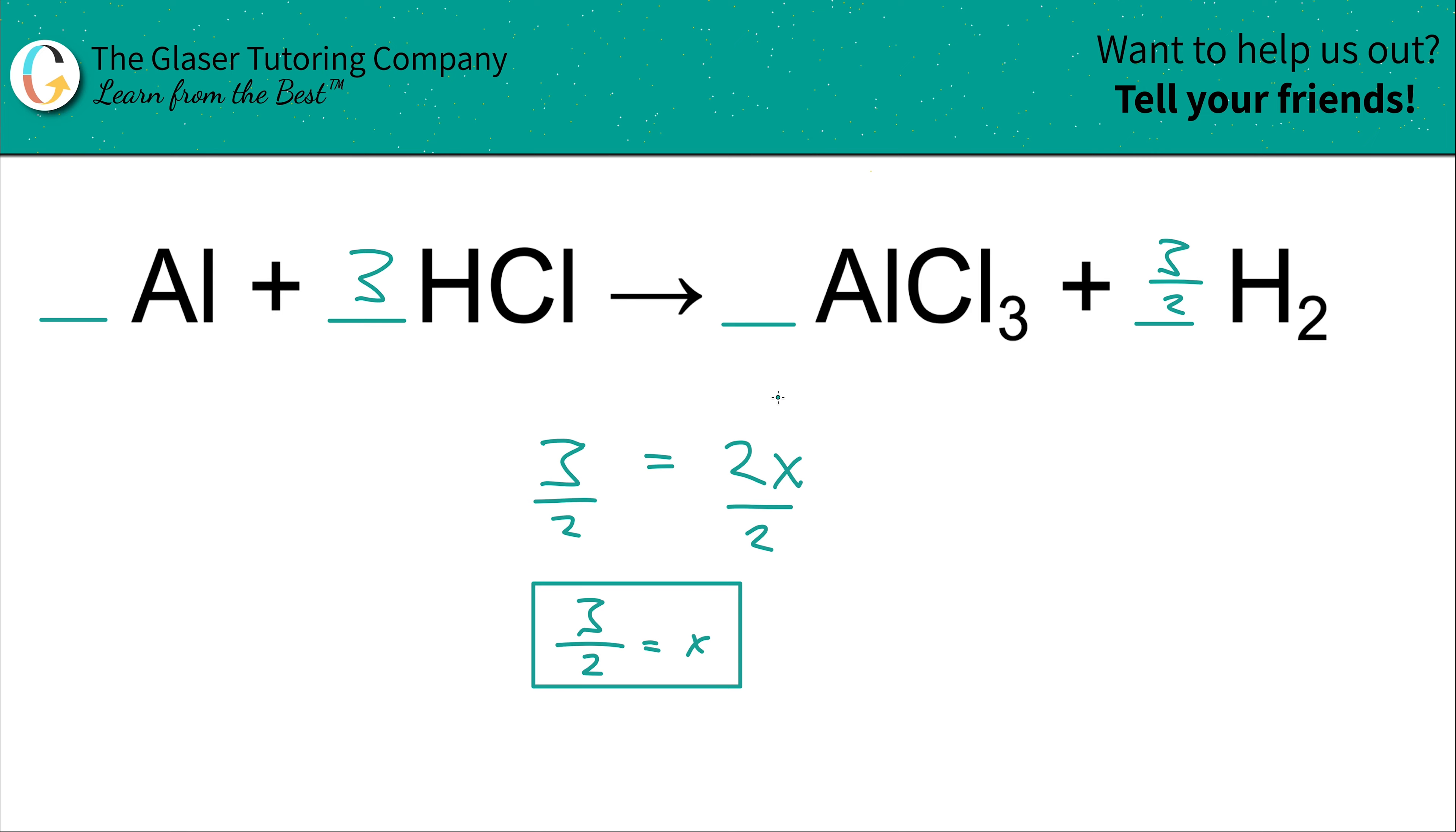So now technically, this equation is fully balanced, but you can't have three halves of a molecule. What does that even mean? That's like having three halves of a person. Can't happen. Either you have a whole person, or two whole people, three whole people. You can't have three halves of a person.